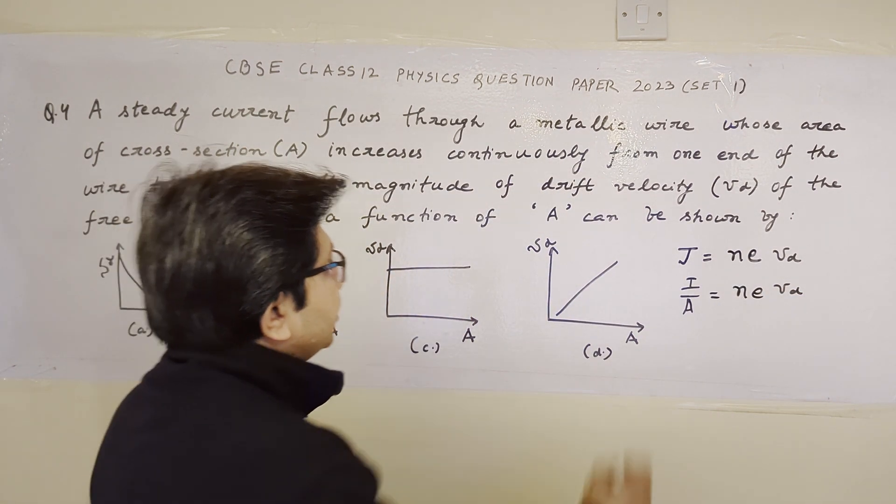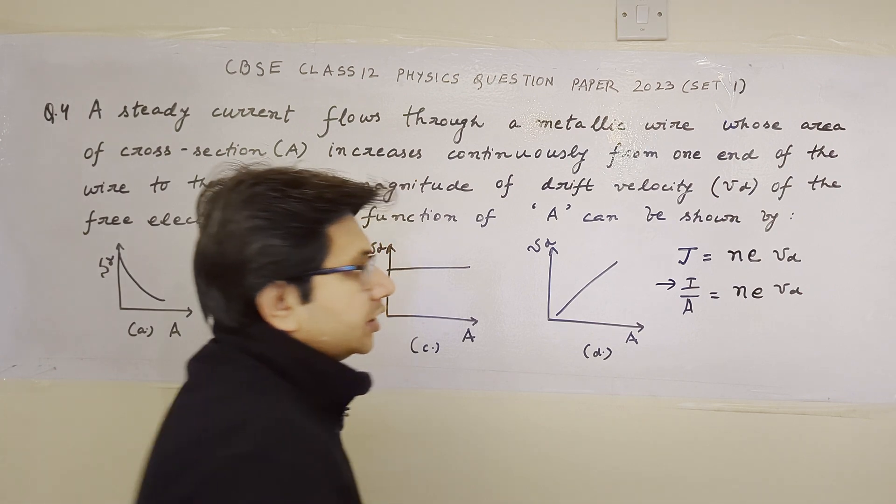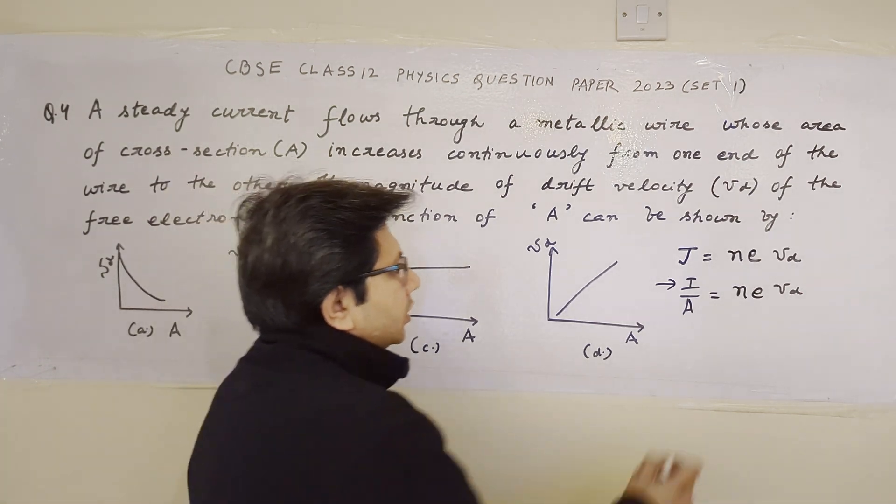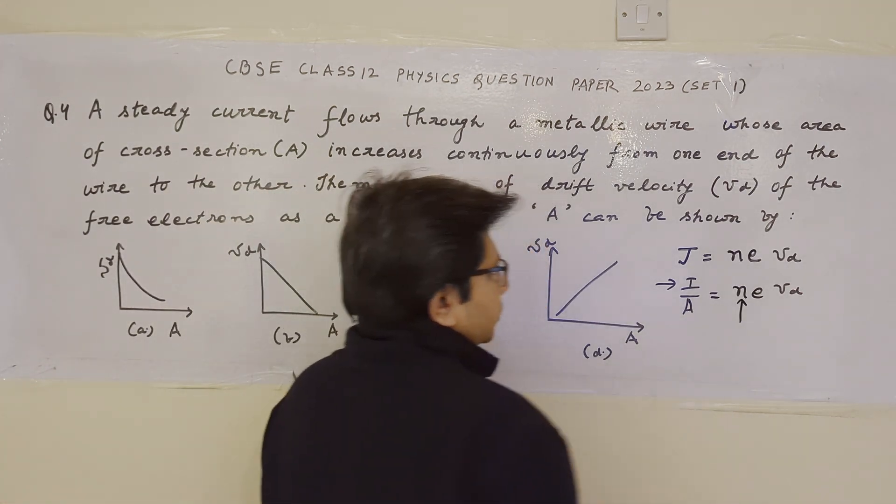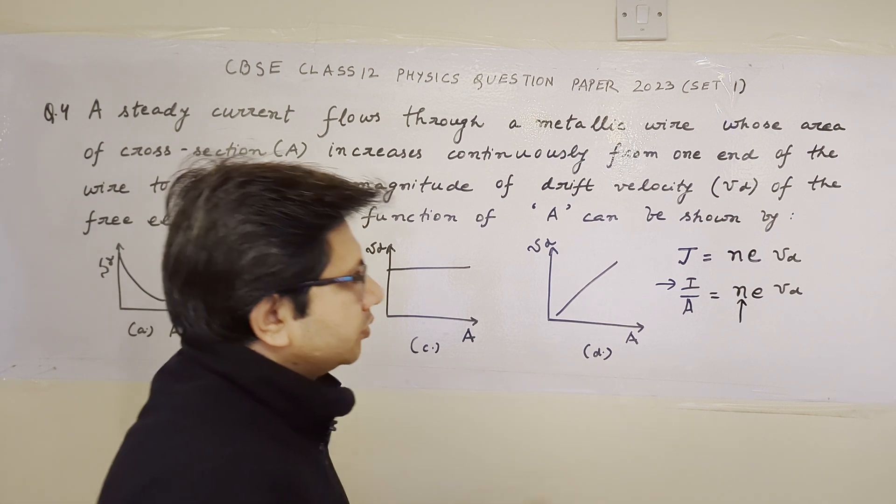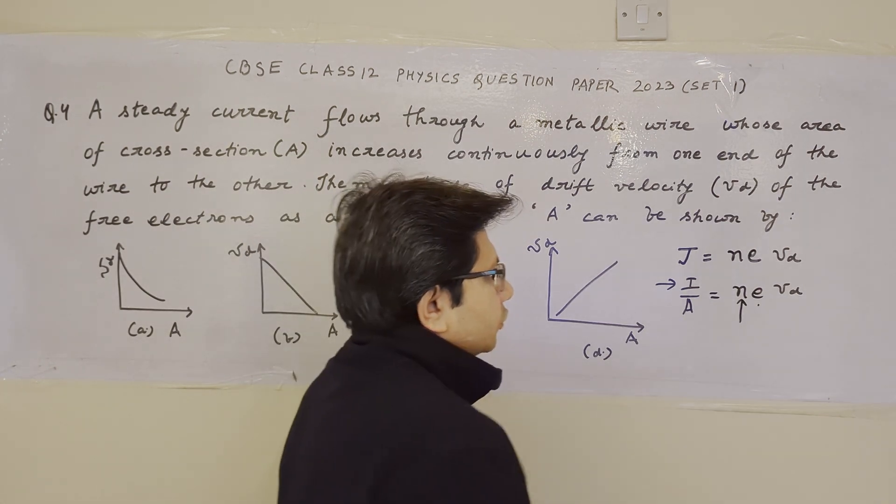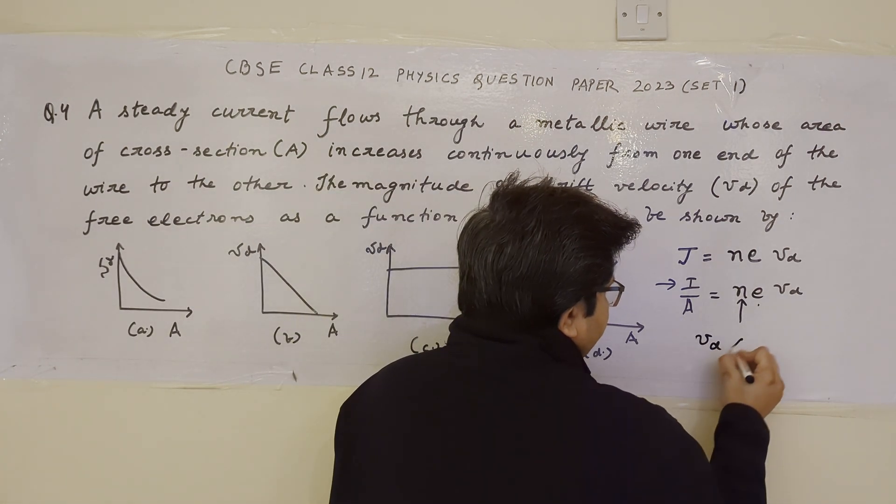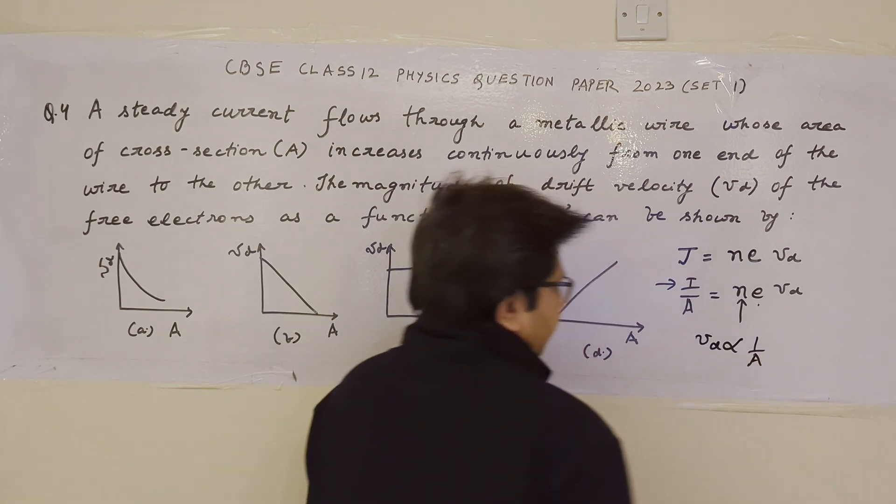Now here, the current is steady. It is said that this is steady, which means it is constant. The charge density of the carriers is also fixed. The charge of the electron is also fixed. So we can say that v_d is inversely proportional to A.